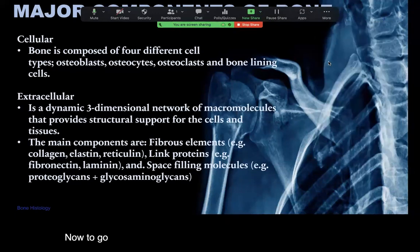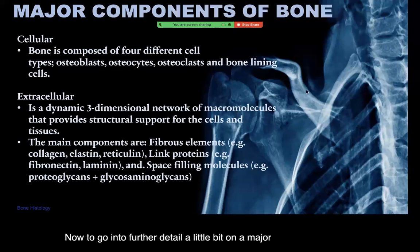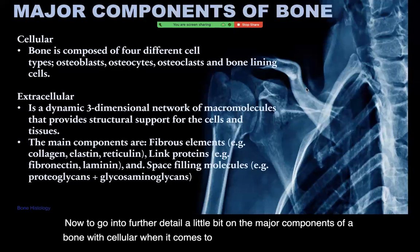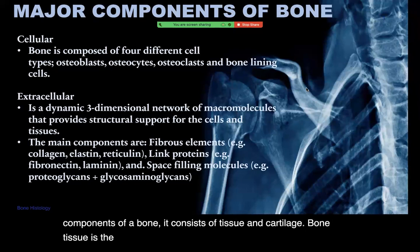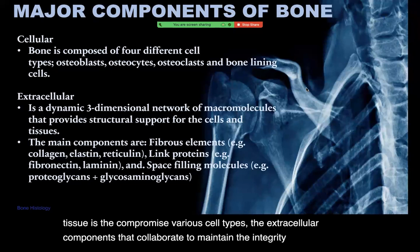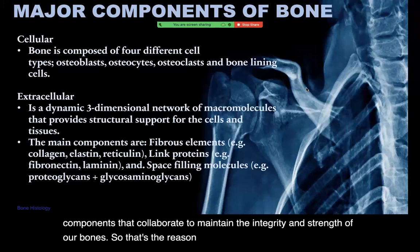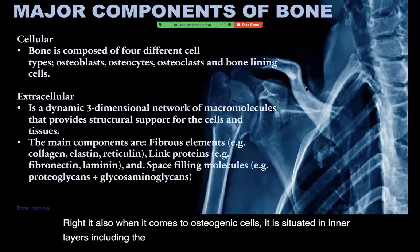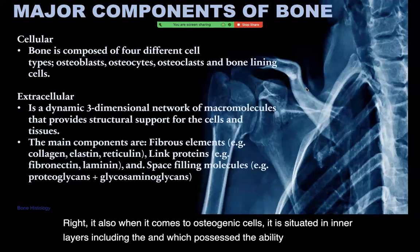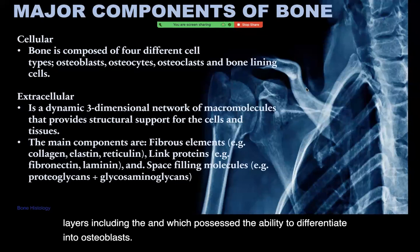Going into further detail on the major components: when it comes to cellular and intracellular components of a bone, it consists of tissue and cartilage. Bone tissue is comprised of various cell types and extracellular components that collaborate to maintain the integrity and strength of our bones — which is the reason why our bones are so strong. When it comes to osteogenic cells, they are situated in inner layers including the periosteum and endosteum, which possess the ability to differentiate into osteoblasts.